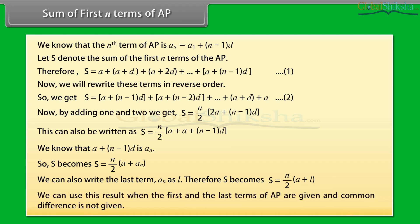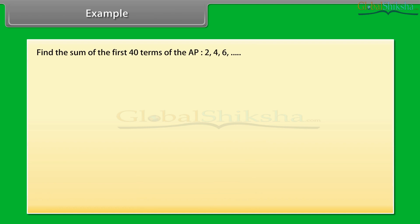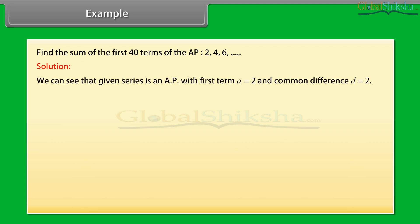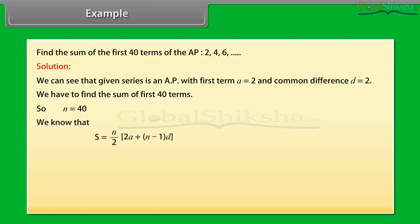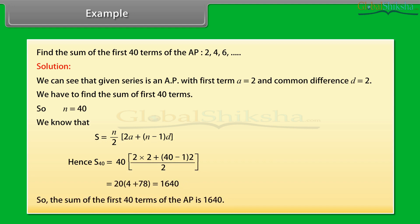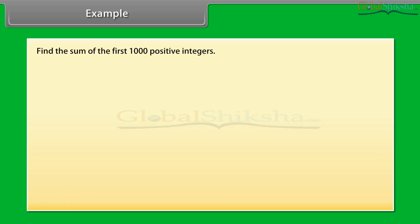We can use the result S = N/2 × (A + L) when the first and last terms are given and common difference is not given. Example: Find the sum of the first 40 terms of the AP 2, 4, 6, ... The given series is an AP with first term A = 2 and common difference d = 2. We need N = 40. Using S = N/2 × [2A + (N−1)d], we get S40 = 40/2 × [2×2 + 39×2] = 20 × 82 = 1640.